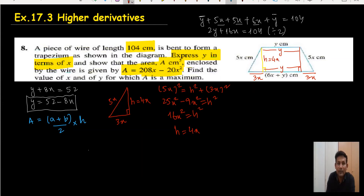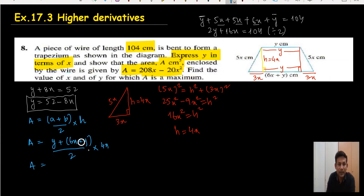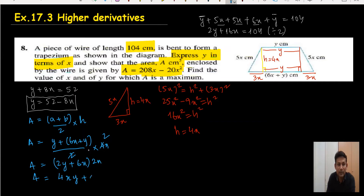Now substituting into the area formula: Area equals (a plus b) divided by 2, times height, where a is y, b is 6x plus y, and height is 4x. The two y terms give 2y plus 6x, divided by 2 cancels with 4x to give 2x. Simplifying, Area equals 4xy plus 12x squared.